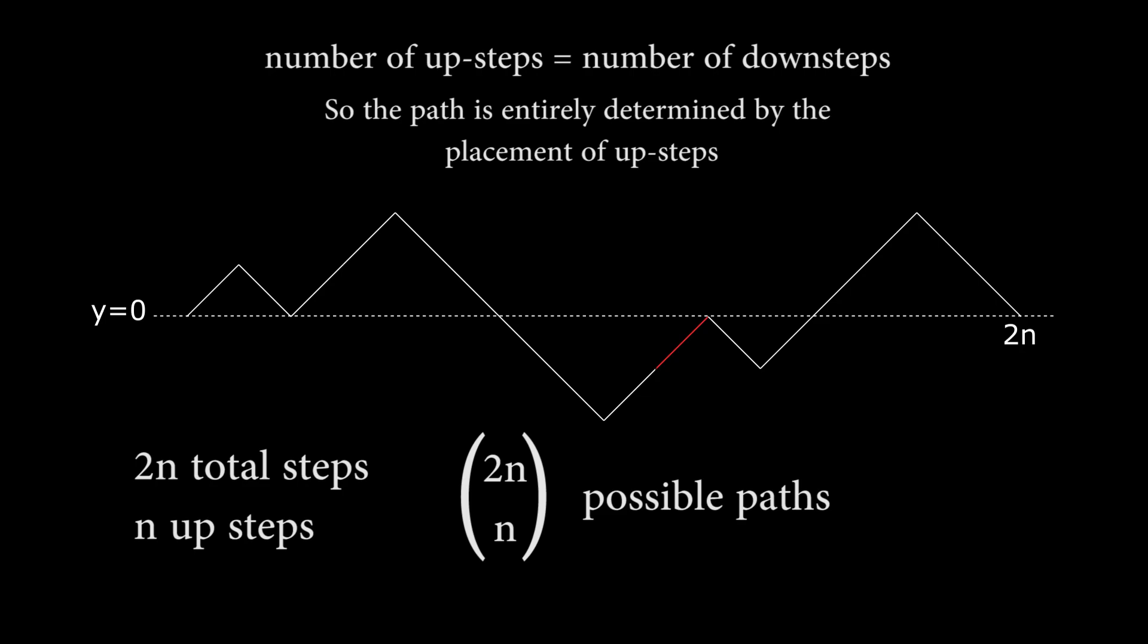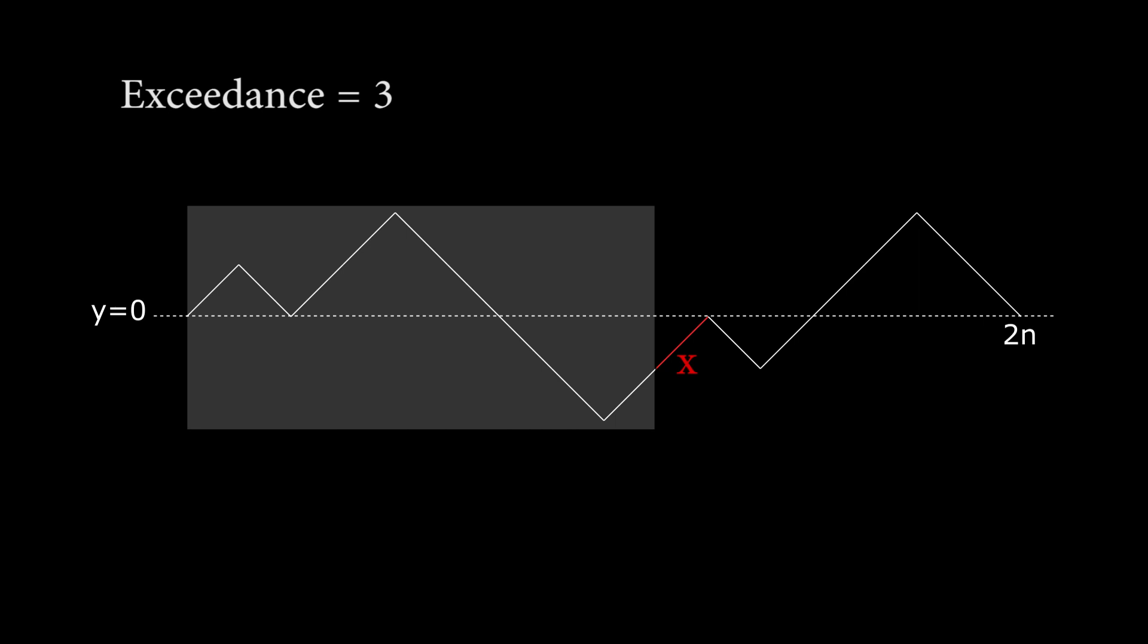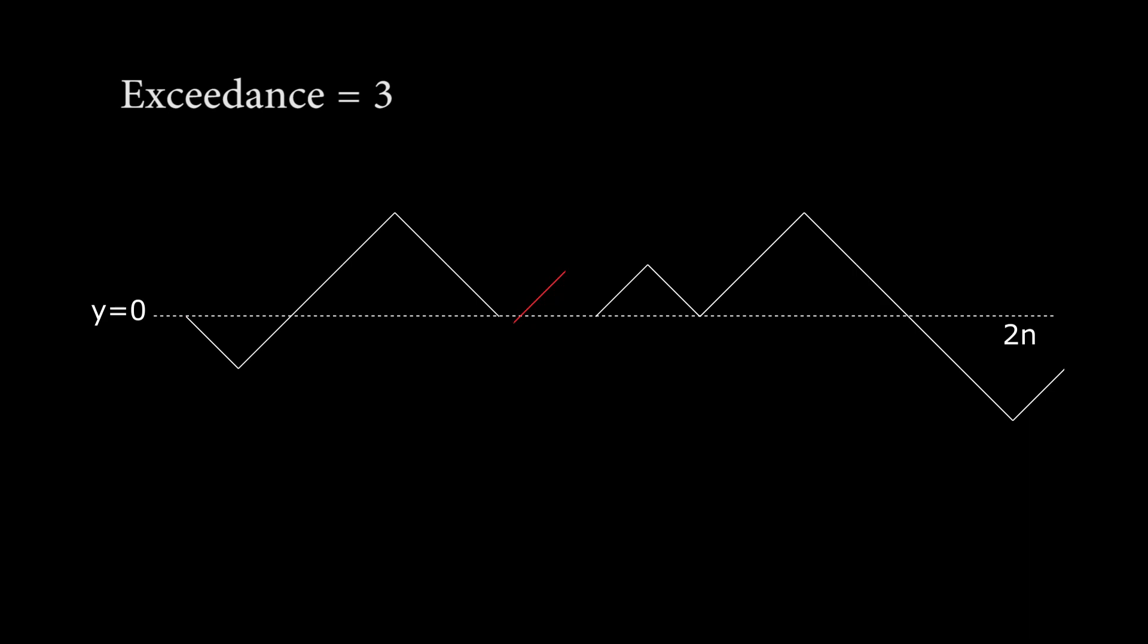But remember, this is describing paths that can go under y equals zero as well. So how do we find the number of paths following our original constraints? For some paths, consider the number of down steps that has below the line y equals zero. I will call this the exceedance of the path. If a path has an exceedance of some positive k, there's a sneaky trick to transform it into a path of exceedance k minus 1. After the first time the path crosses below the y equals zero line, find the up step that brings it back to y equals zero. I'll call this segment x. Now take the sections of the path before and after x and swap them.